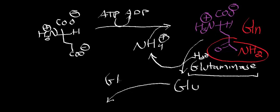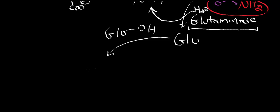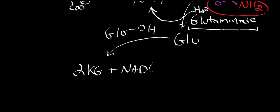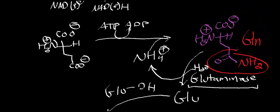The glutamate made from glutaminase then follows the same pathway as before — it reacts with glutamate dehydrogenase to give alpha-ketoglutarate along with either NADH or NADPH, since the enzyme can react with either NAD+ or NADP+. The enzyme that ligates ammonia to glutamate has a special name: glutamine synthetase, and it is ATP-dependent.